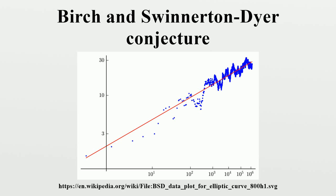The natural definition of L only converges for values of s in the complex plane with real part greater than three halves. Helmut Hasse conjectured that L could be extended by analytic continuation to the whole complex plane. This conjecture was first proved for elliptic curves with complex multiplication, and was subsequently shown to be true for all elliptic curves over Q as a consequence of the modularity theorem. Finding rational points on a general elliptic curve is a difficult problem. Finding the points on an elliptic curve modulo a given prime p is conceptually straightforward, as there are only a finite number of possibilities to check; however, for large primes it is computationally intensive.